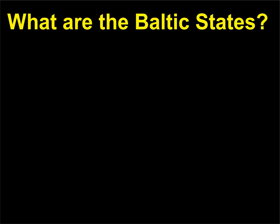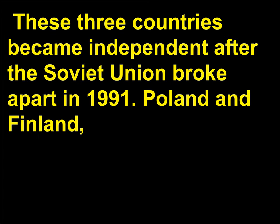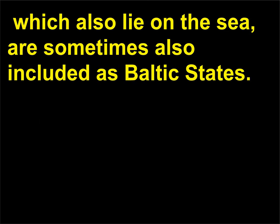What are the Baltic states? The three Baltic states of Estonia, Latvia, and Lithuania are so named because they lie on the Baltic Sea. These three countries became independent after the Soviet Union broke apart in 1991. Poland and Finland, which also lie on the sea, are sometimes also included as Baltic states.